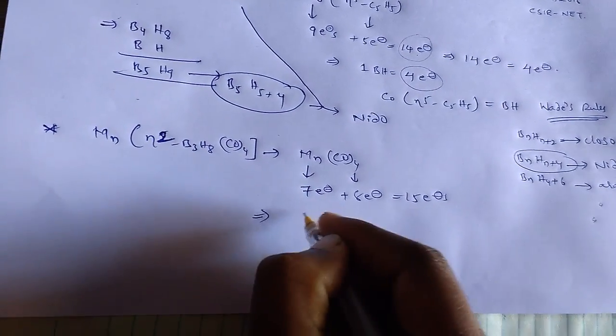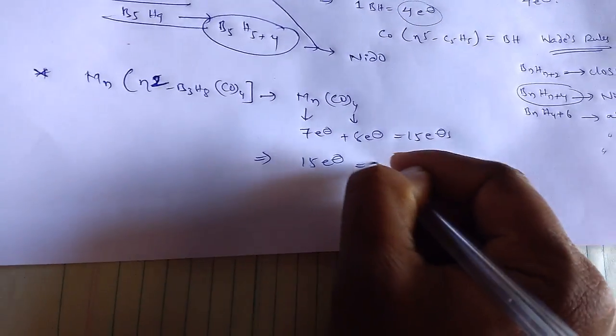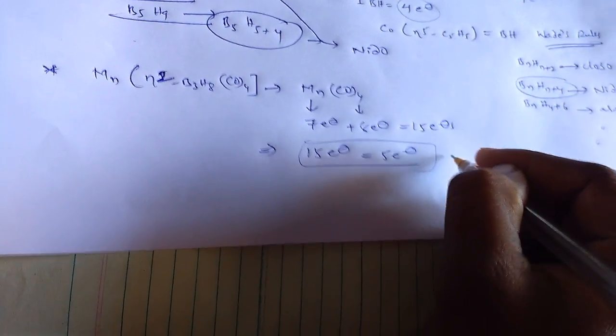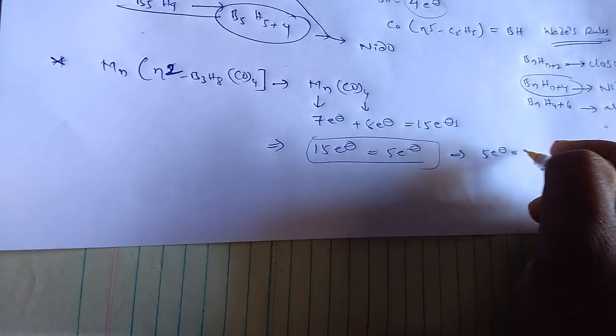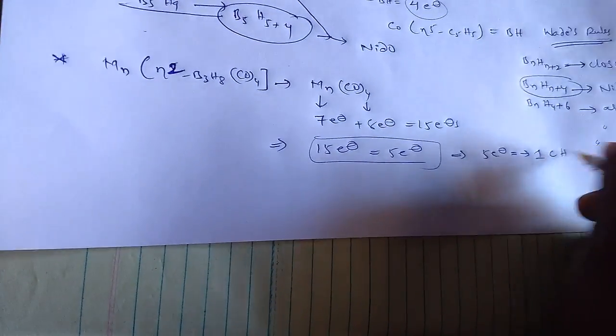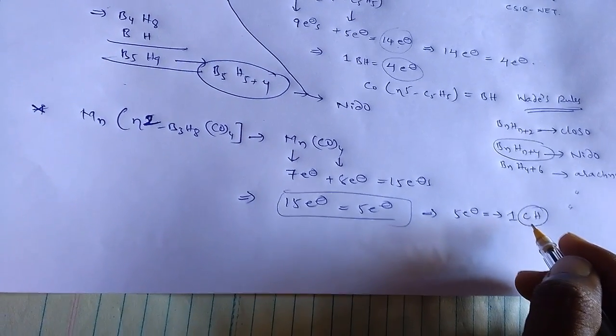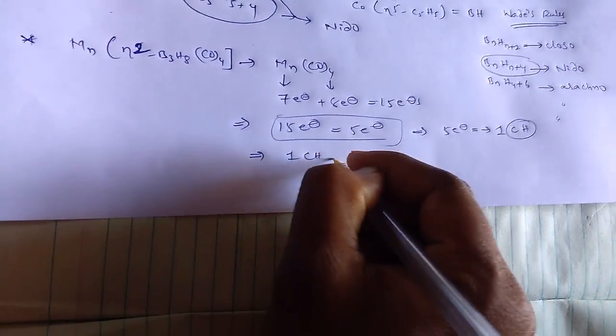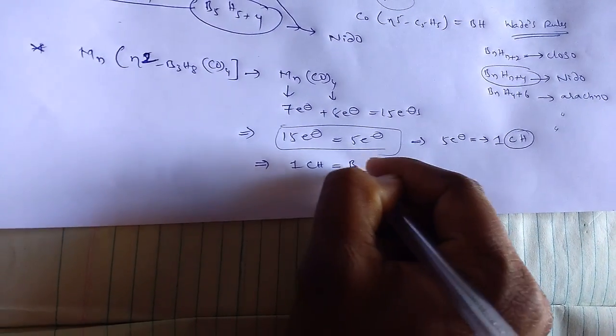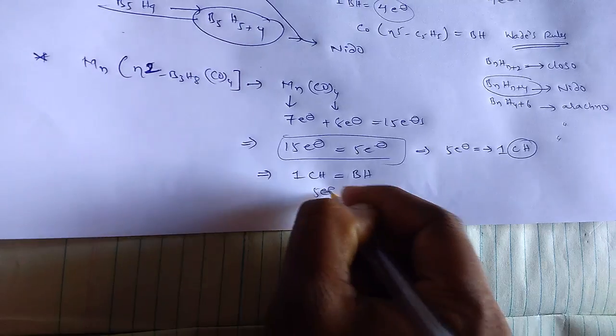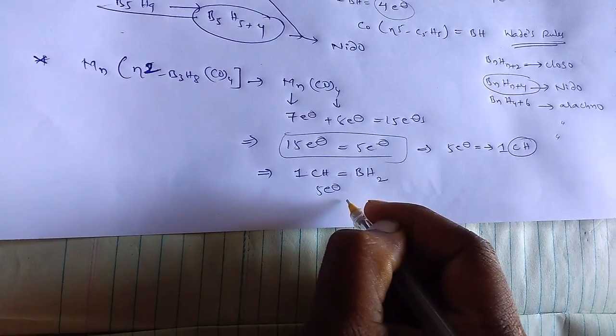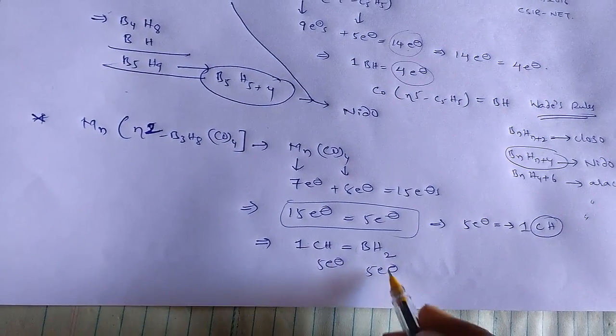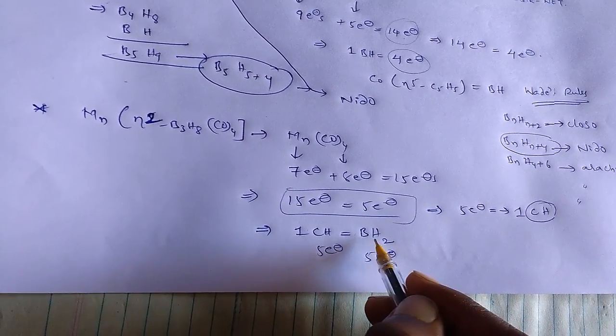From this, 15 valence electrons equals to 5 electrons. This is isolobal energy accepting. 5 electrons equals to one CH. This CH has five electrons in its valency. One CH is equal to one BH2, then it has five electrons.